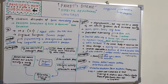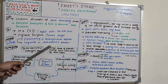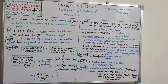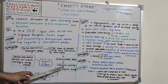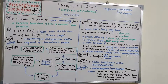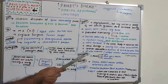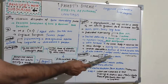Moving on to pathogenesis, Paget's disease is a bone remodeling disease with a hypervascular or osteolytic phase. The initial phase involves bone resorption by osteoclasts, followed by an intermediate phase where osteolytic and osteoblastic activity both change, and finally a burnout stage where the normal process of osteoblasts and osteoclasts is completely altered.